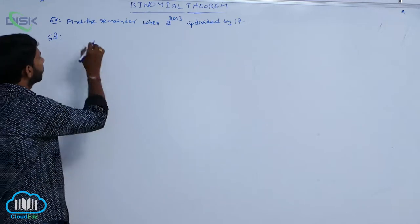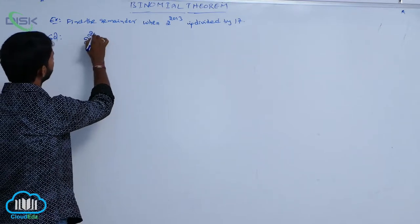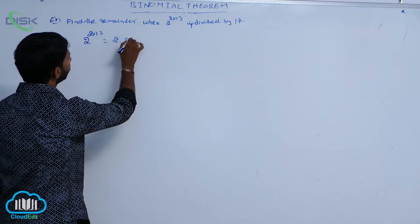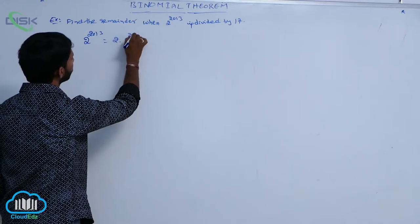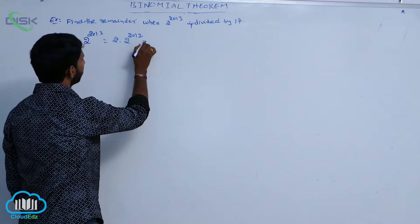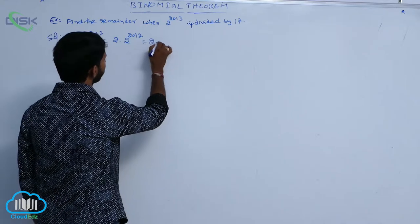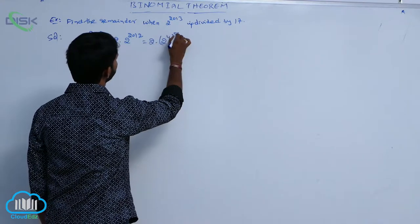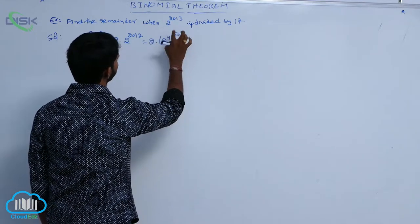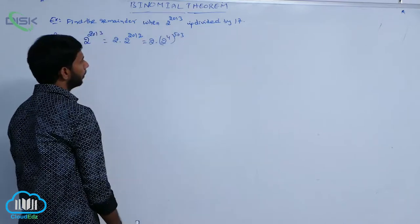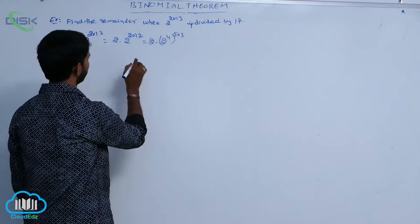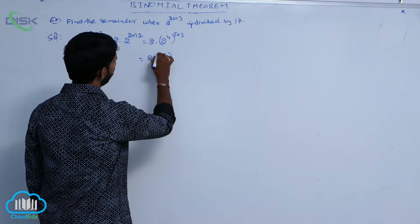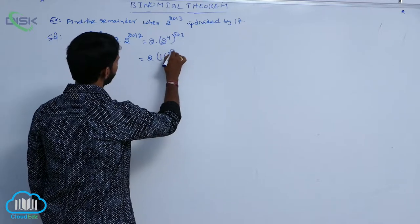First of all, 2 power 2013 can be written as 2 of 2 power 2012. It can be written as 2 of (2 power 4) whole power 503, that is 2 of 16 whole power 503.